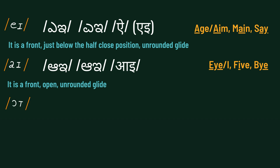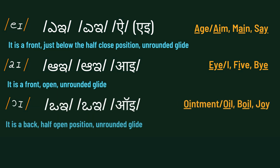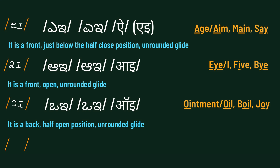The third one is /ɔɪ/. It is a back off-open position and rounded glide. Examples are: ointment, oil, boil, joy.